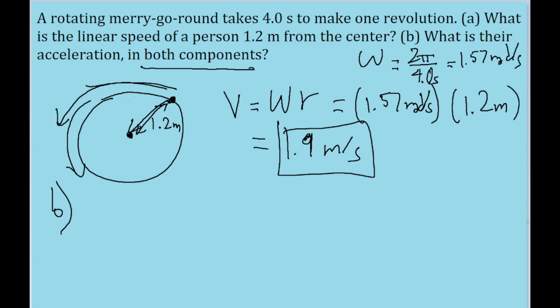In this case, it doesn't seem like there is a tangential component because nothing in the problem indicates that the speed of the merry-go-round is increasing. Nothing tells us that the merry-go-round is increasing in speed. So for this problem, I think it's safe to assume there is no tangential acceleration.